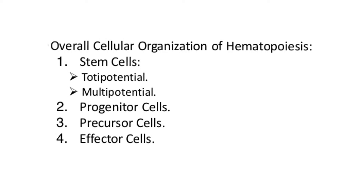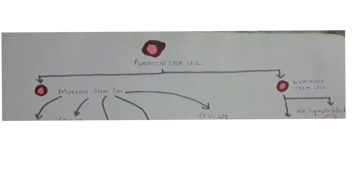The outline of the cellular pathway includes four types: first, stem cells, which have two types — totipotential and multipotential; second, progenitor cells; third, precursor cells; fourth, effector cells. The pluripotent stem cells derived from totipotential cells produce two types of cells: myeloid stem cells and lymphoid stem cells.